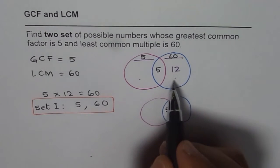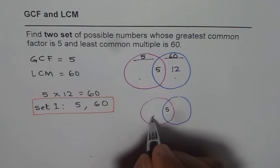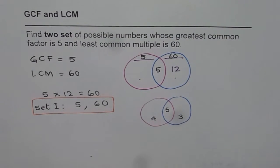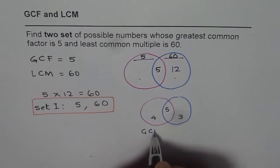Now we know 12 when multiplied by 5 will give us 60. We can write 12 as 4 times 3 also. Now here also, what is the greatest common factor? It is 5.